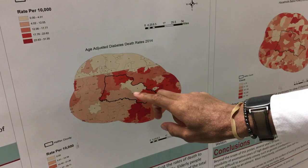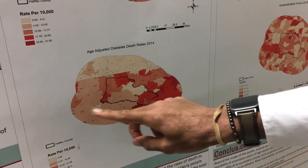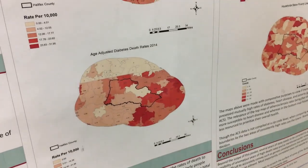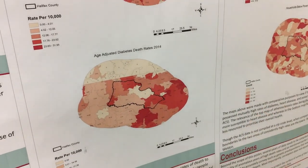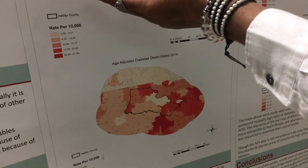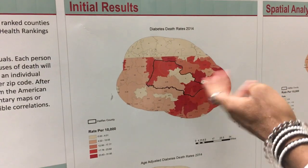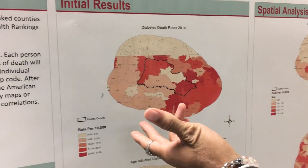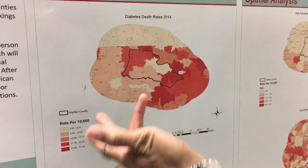When it's age-adjusted, that means that younger people are dying of these diseases, because at straight rates you're really just mapping older populations, since older people are more likely to die.